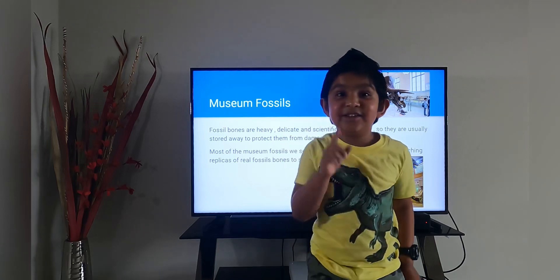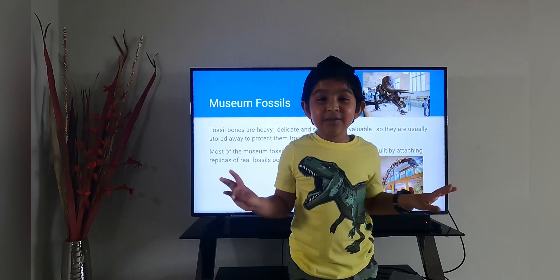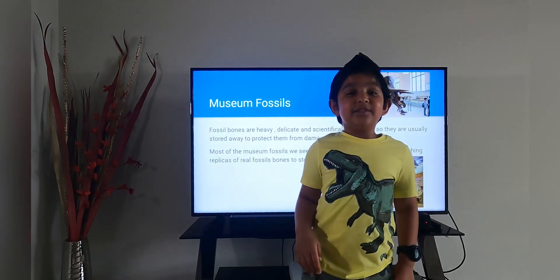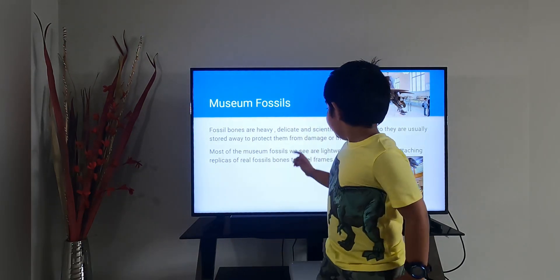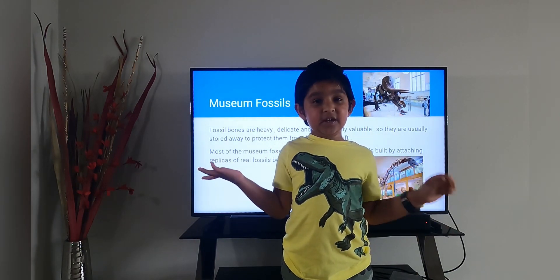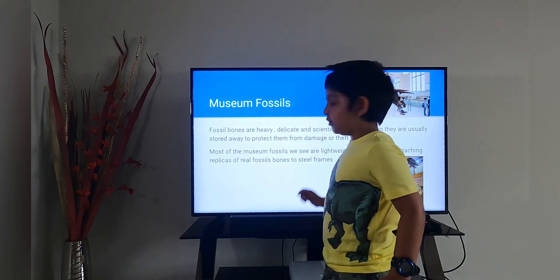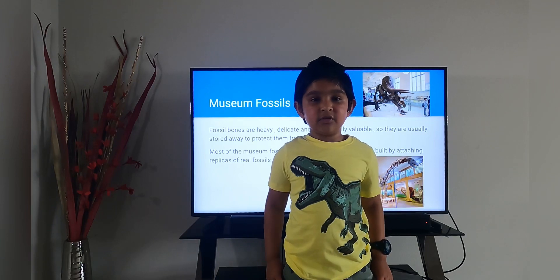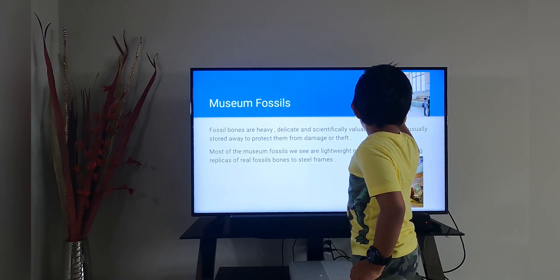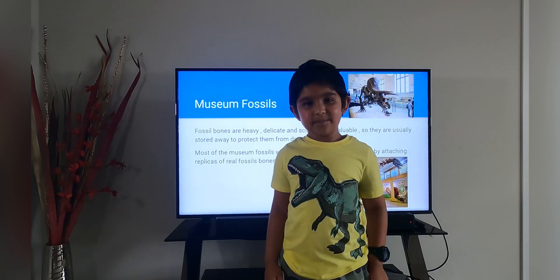Next is museum fossils. Do you know what's interesting? Museum fossils don't have the original fossils. Original fossils are very heavy and delicate and precious. So if they put them in the museum, some people could break or damage them. So they use some equipment like a steel frame to make duplicate fossils that look very similar to original fossils. This is a triceratops and this is a sauropod.